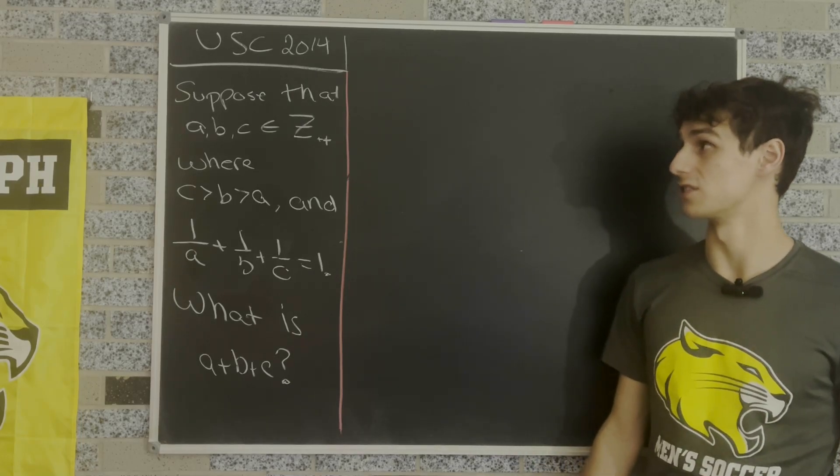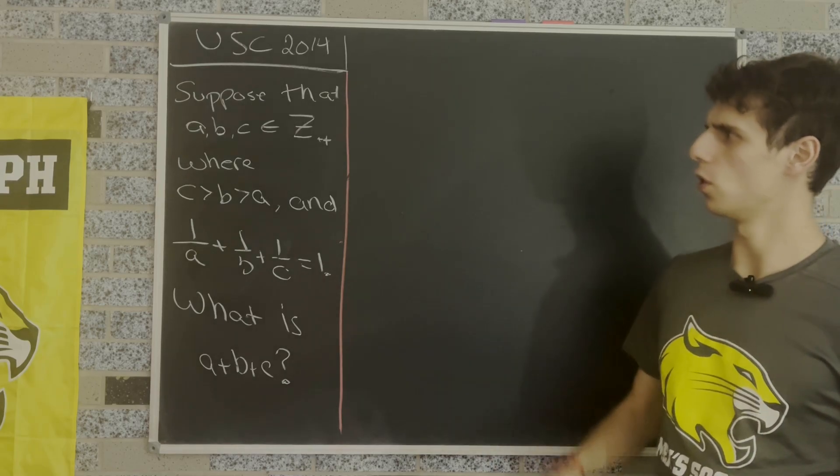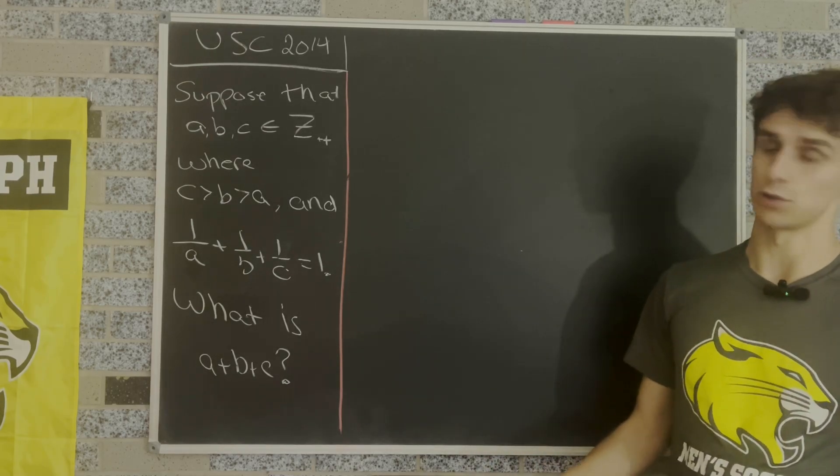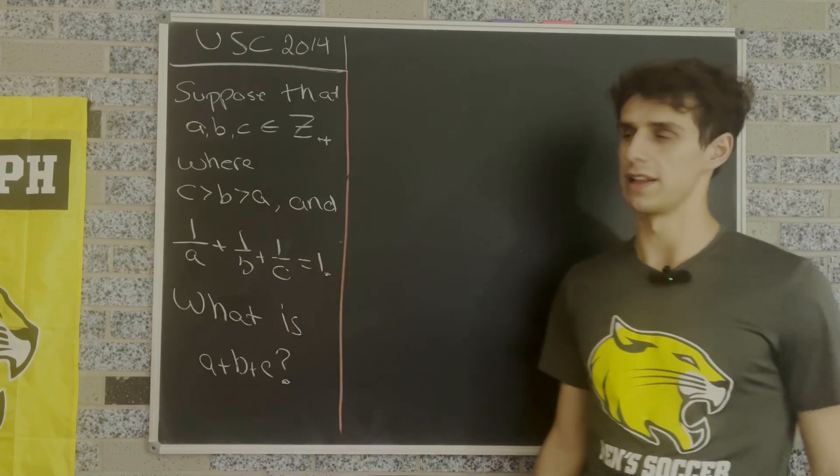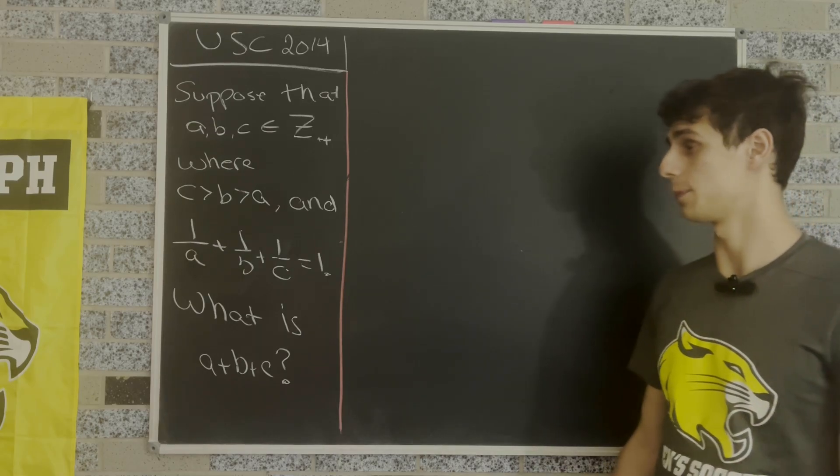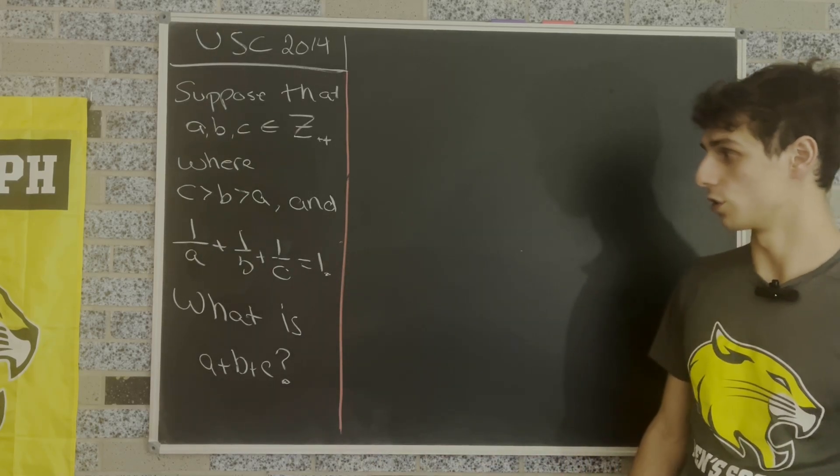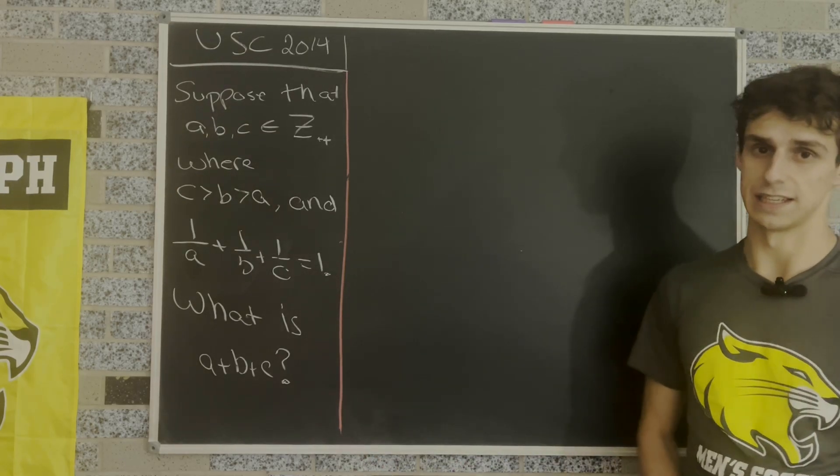Today's math puzzle comes from the University of South Carolina math contest in 2014. It says suppose that A, B, and C are all positive integers where C is greater than B which is greater than A. Notice those are all strictly greater than, which means these variables can't be equal to each other, and that 1 over A plus 1 over B plus 1 over C equals 1. It asks us to find A plus B plus C.